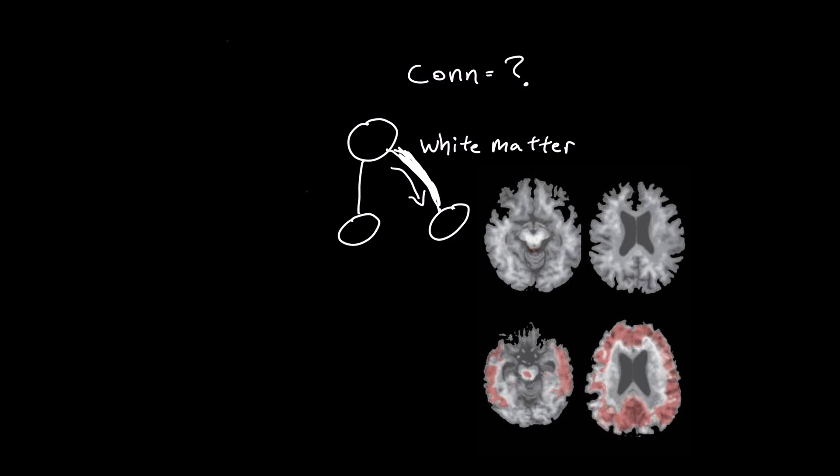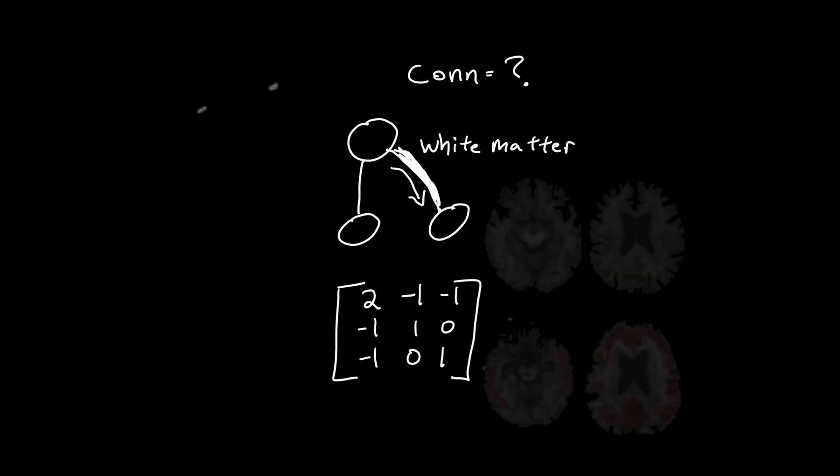How do we calculate this? By using a collection of numbers called the graph Laplacian matrix. Each row in the matrix corresponds to a node, and so does each column.